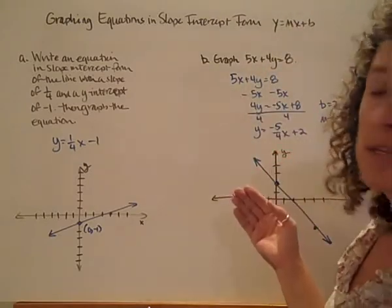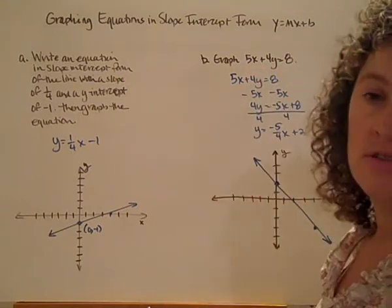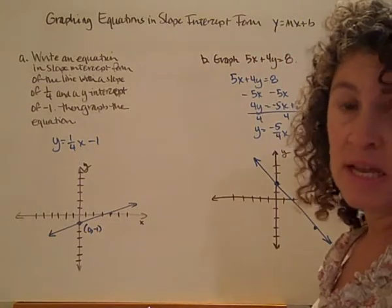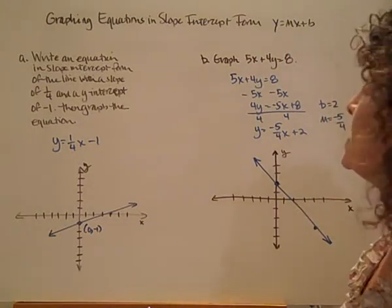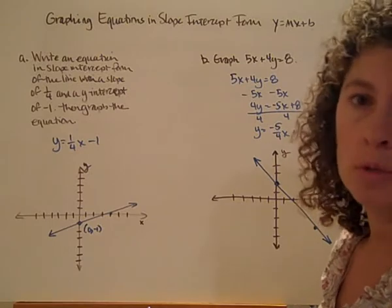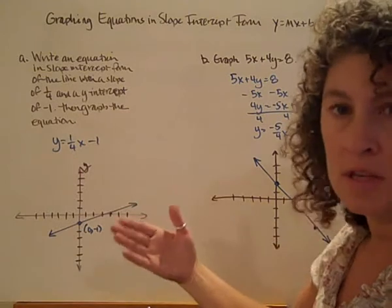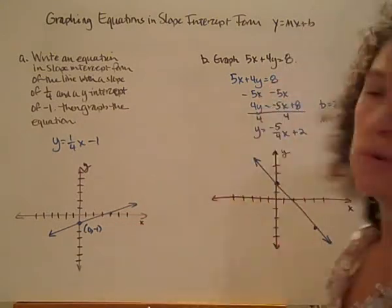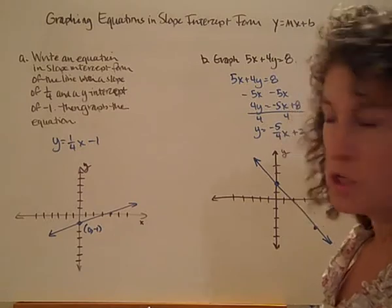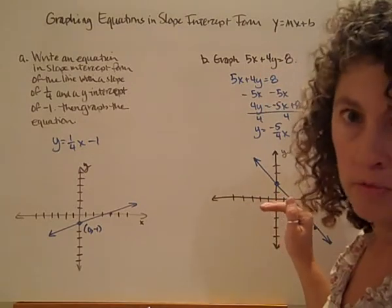Next one, we're going to be asked to graph 5x plus 4y equals 8. Now you may recognize the form of this equation. This is our standard form. And if you remember, standard form is very fancy, has a lot of rules. It's not as user-friendly. You can definitely use it to graph an equation, but you have to do a little bit of work first. Unlike our slope-intercept form where everything's sitting right there waiting for you, not so much with our standard form. So one way we can use standard form to graph an equation is to rewrite it in slope-intercept form, friendlier to work with.